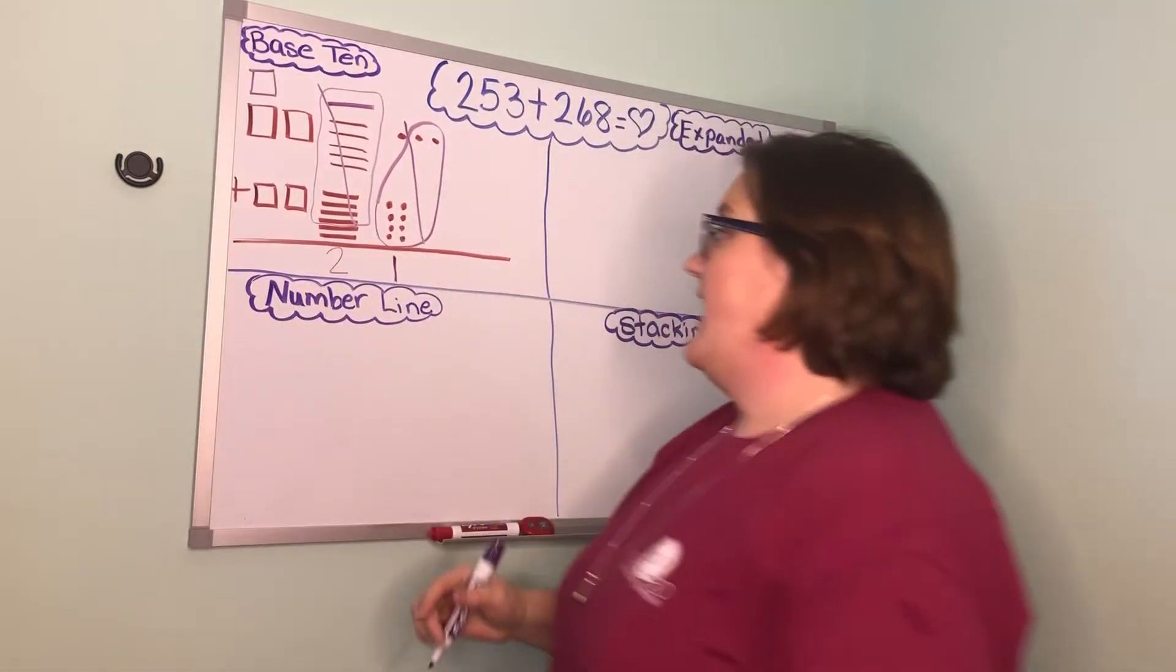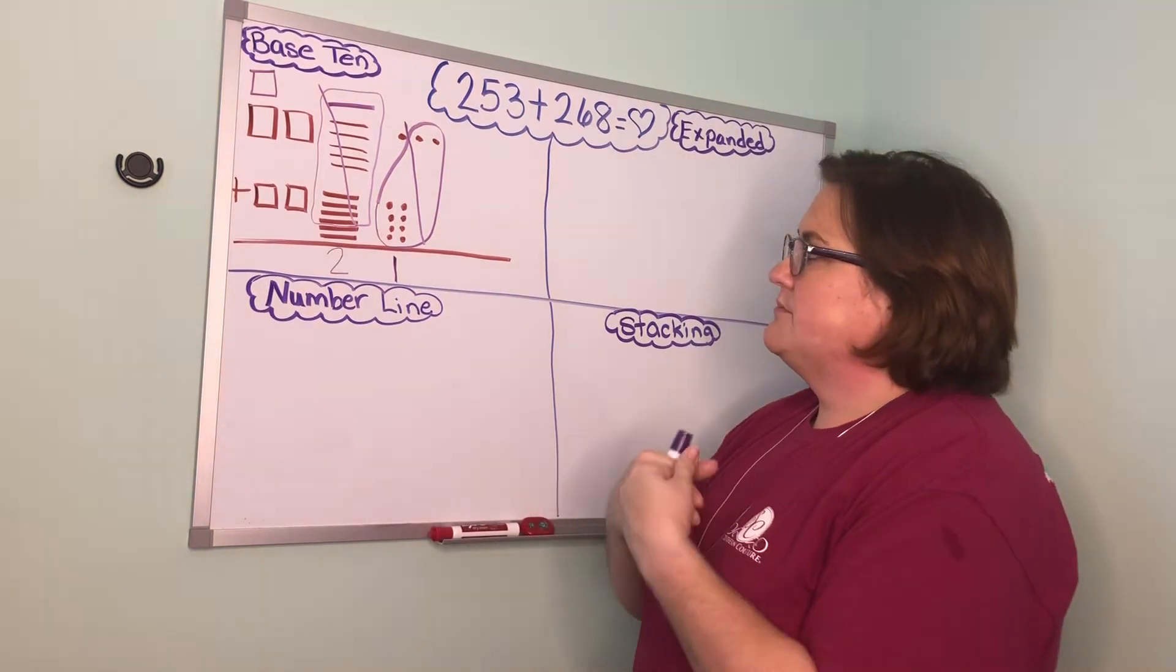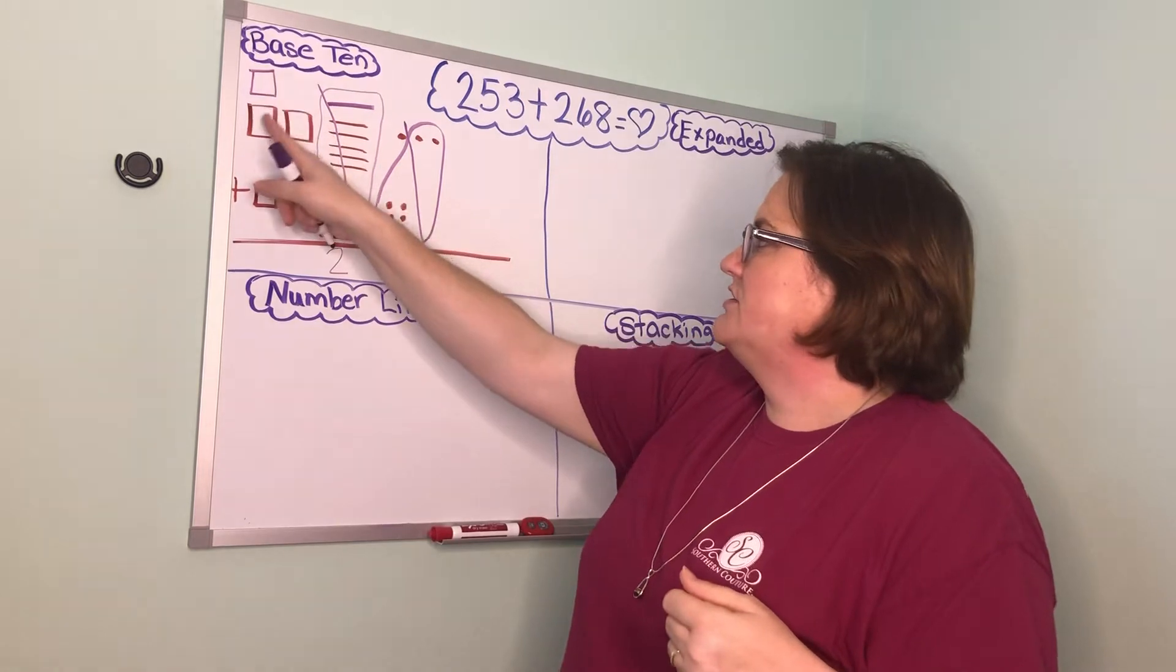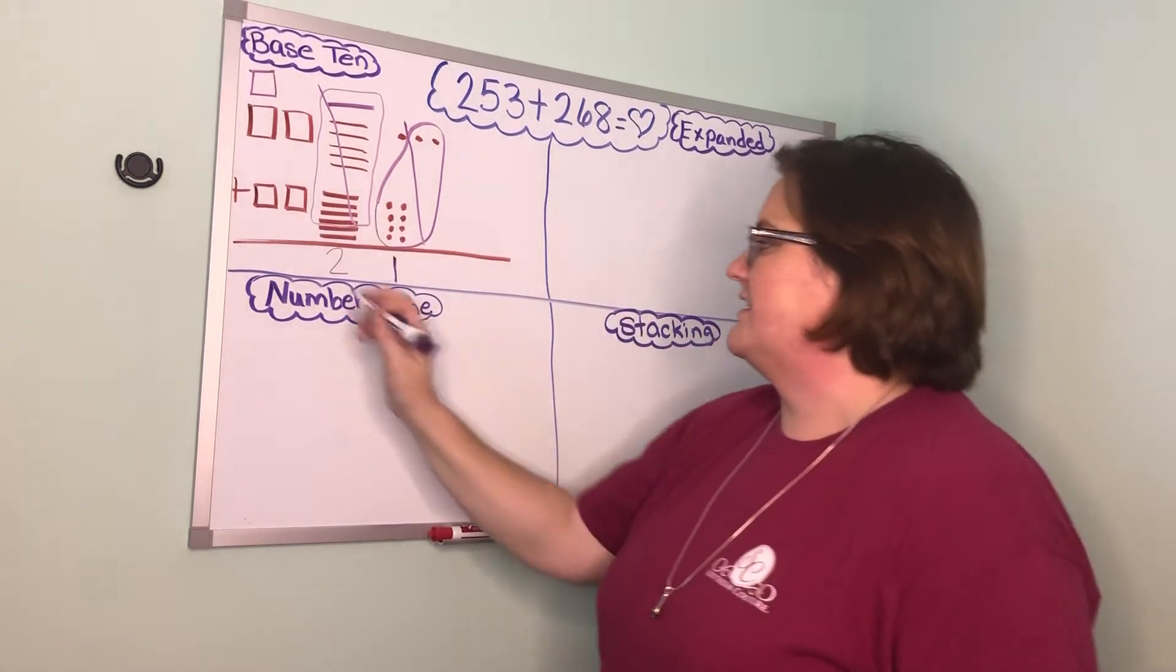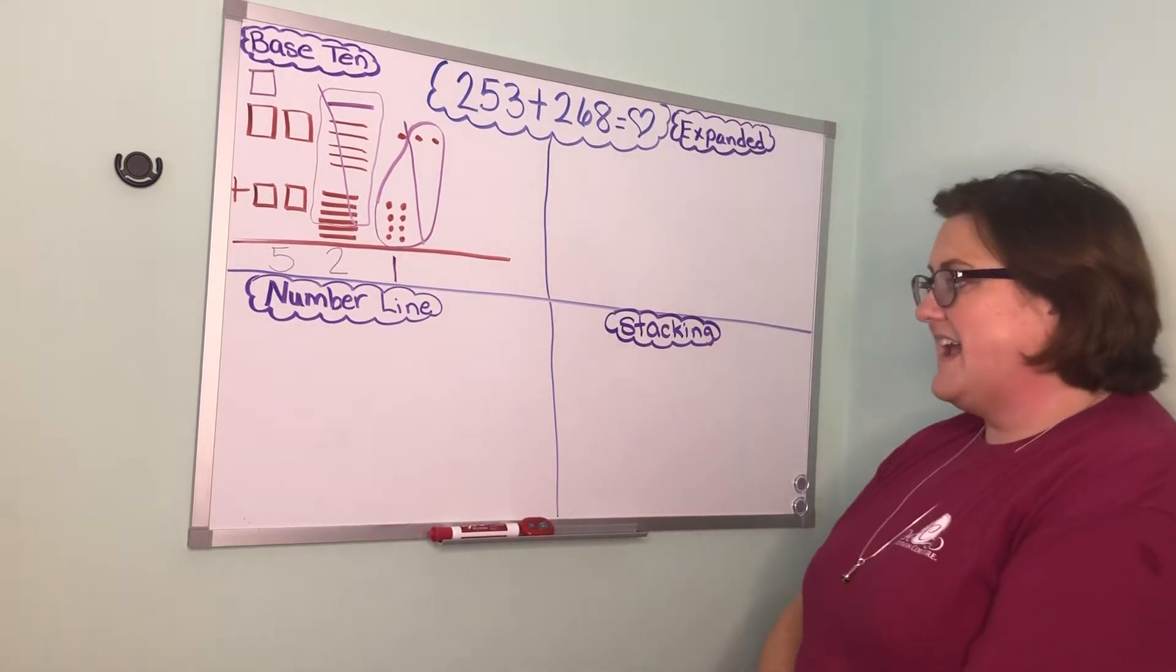All right now I look at my hundreds. I do not have enough hundreds to compose to make a thousand so I'm ready to just count my hundreds. I have one, two, three, four, five hundreds. So that makes my answer for 253 plus 268, 521.